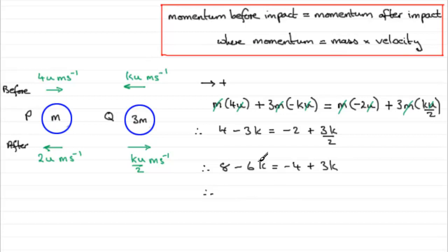Then what I'm going to do is add 6k to both sides and add 4 to both sides. So 8 plus 4 gives me 12, and then I've got 3k plus another 6k, which is 9k. And if I divide both sides by 9, I get k equals 12 ninths. And if you divide top and bottom here by 3, you're going to get k equals 4 over 3. Four thirds.